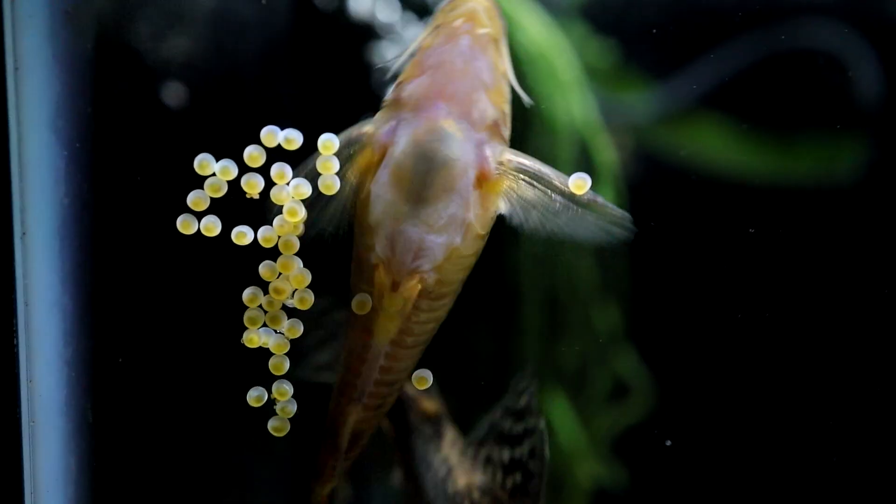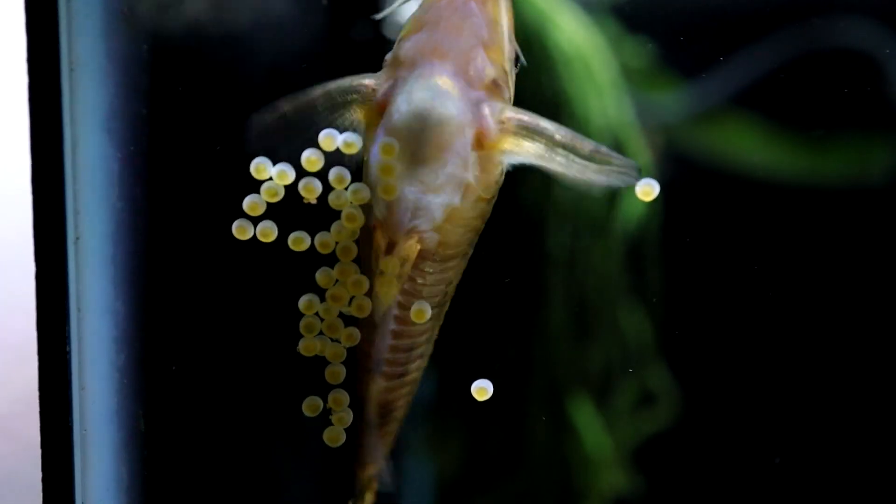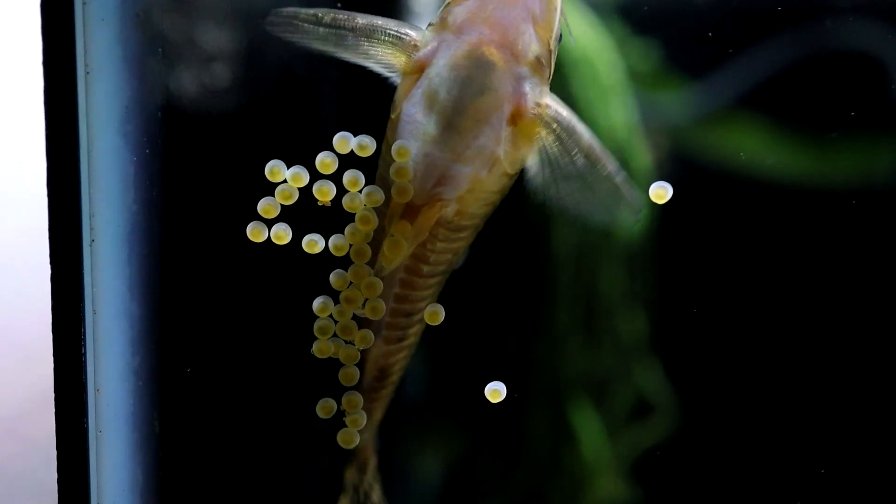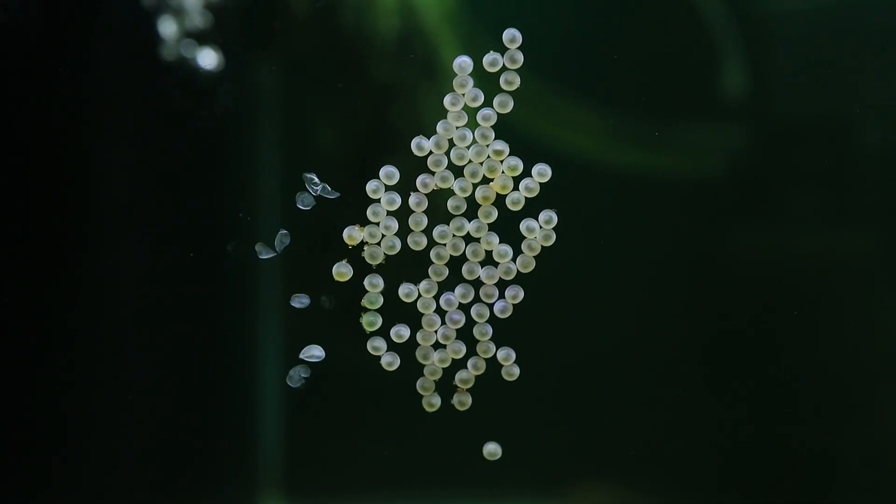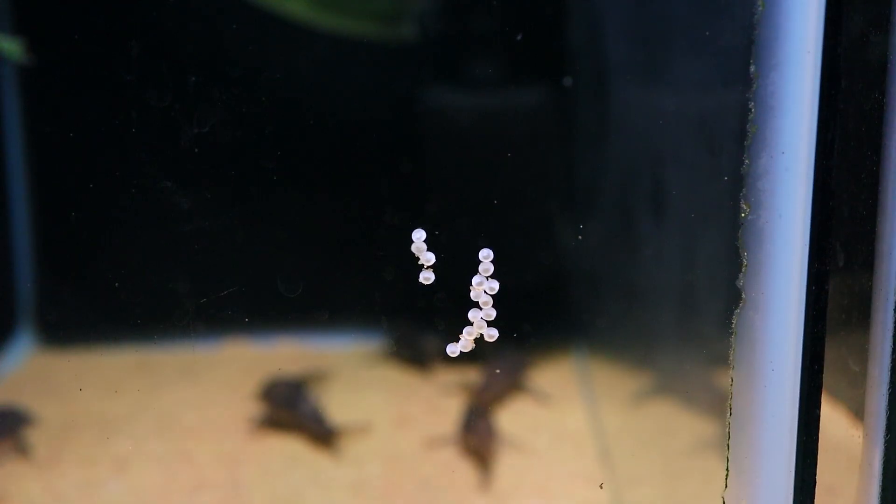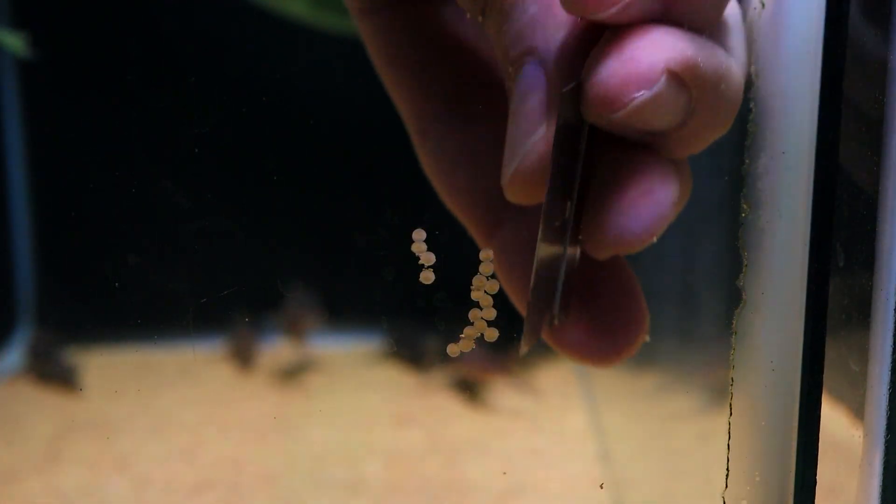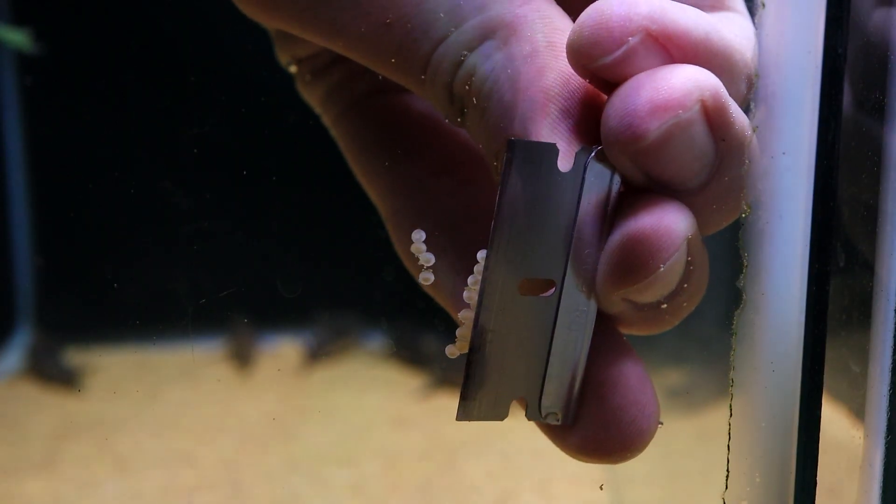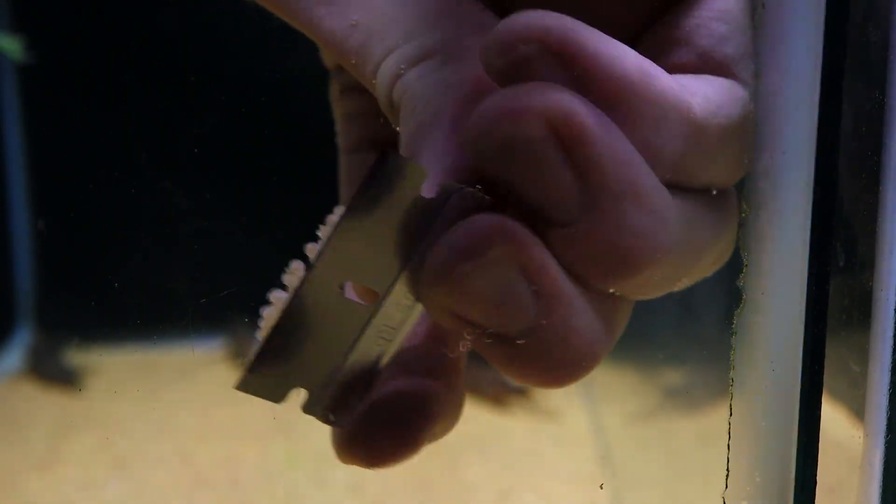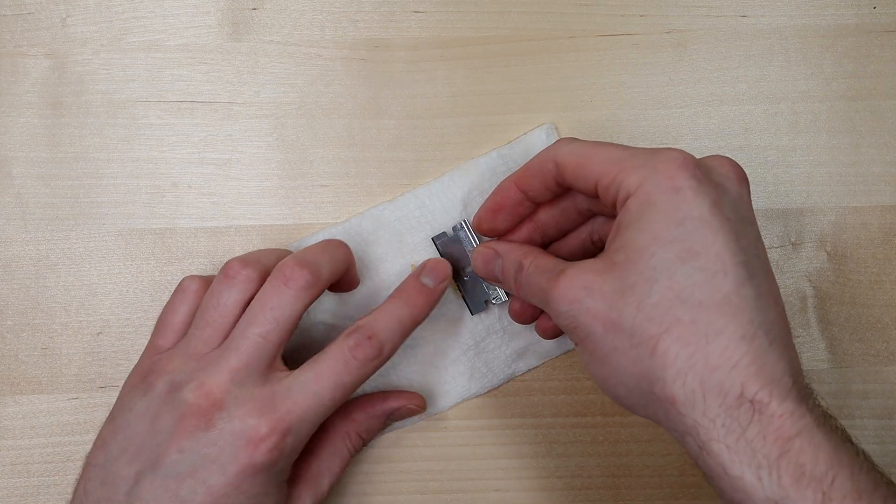I started with some eggs from Scleromistax barbatus. I've found their eggs to be unusually sensitive, and they also like to lay them in big clumps that almost guarantee a fungus problem if you don't get ahead of it. I don't usually collect eggs with a razor blade, but for these big clumps I've found it helpful. I'm still getting the technique down, but I only scrambled one egg here and that's an improvement.